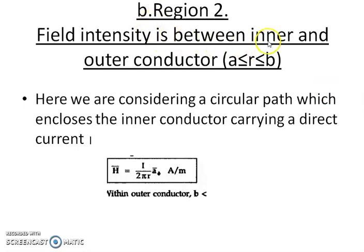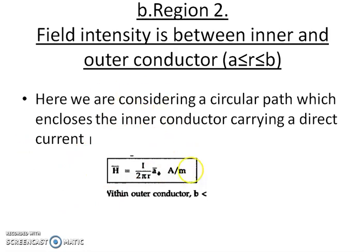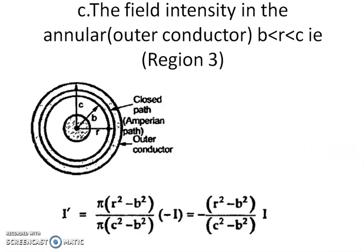Next, Region 2: the field intensity between the inner and outer conductors, where a ≤ r ≤ b. Here we consider a circular path which encloses the inner conductor carrying direct current I. Using Ampere's circuit law, the closed integral of H dot dl equals I, giving H = I / (2πr) × a_phi amperes per meter.